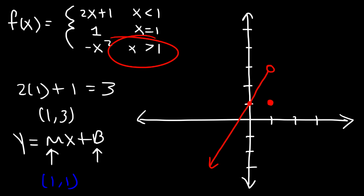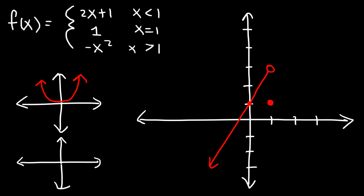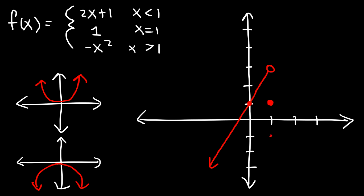When x is greater than 1, we have the graph negative x squared. Positive x squared is a parabola that opens upward. Negative x squared is a parabola that opens downward. If we plug in 1 into this expression that gives us negative 1, so we have a point in that region but with an open circle because it doesn't include 1. When x is 2, negative 2 squared is negative 4, which should be somewhere down here. So it's going to look like a downward curve — we need to give it a curved shape, not a straight line.